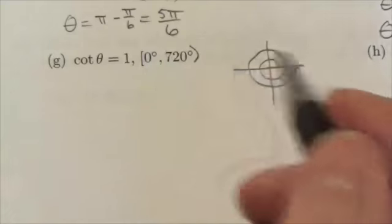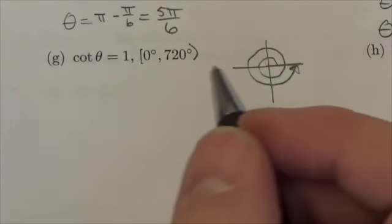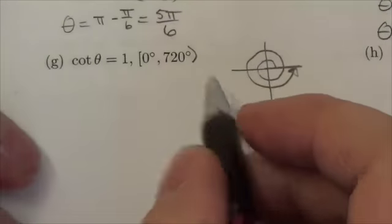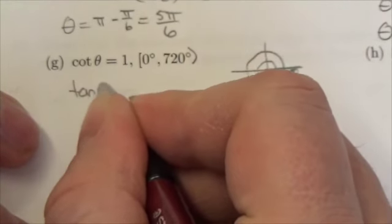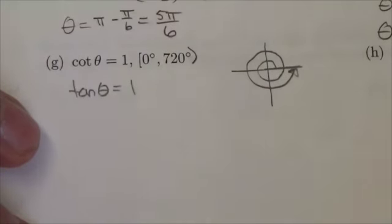Now I come back to this: cotangent equals 1. I'd rather not be working with cotangent - I'd rather be working with one of the primary trig ratios. So I know cotangent is the reciprocal of tangent, so I'm going to reciprocate both sides. But the beautiful thing is when you reciprocate 1, you just get 1.